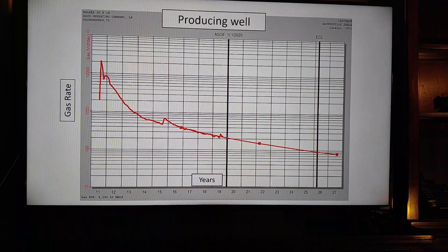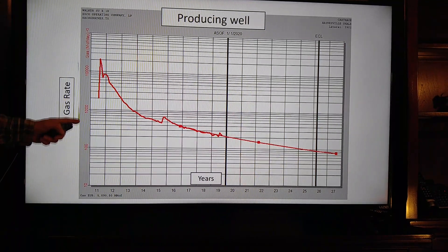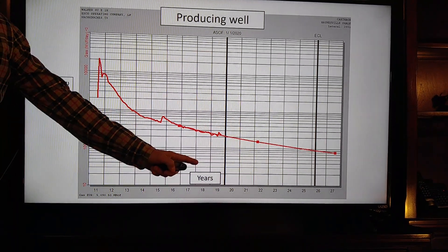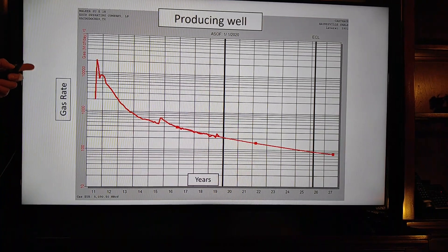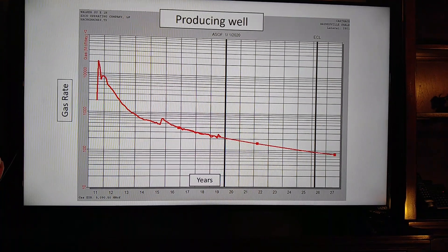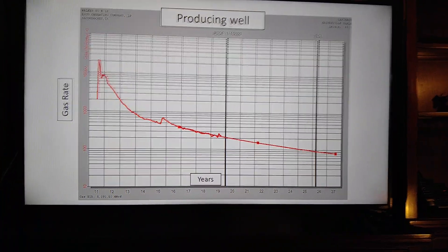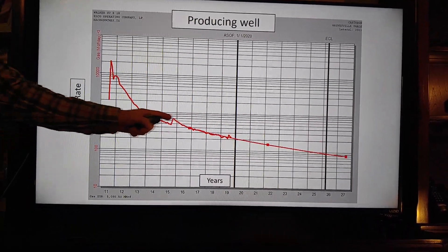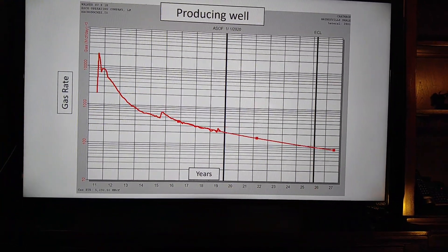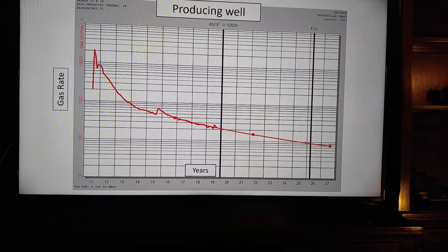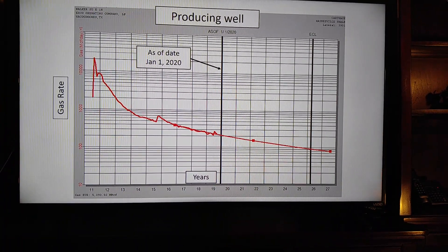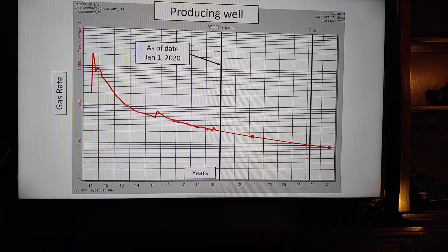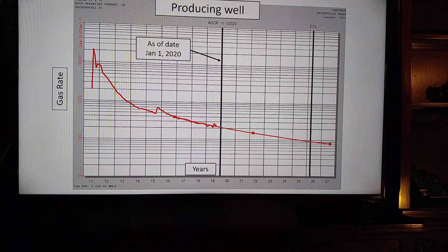All right, here's an example of a producing well. You have the rate on the y-axis and the time in years on the x-axis. The jagged red line is the production history of the well, and the smooth line going forward is the reserve projection of what you think the well is going to do in the future. The as-of date is January 1st, and it's indicated by the heavy black line.